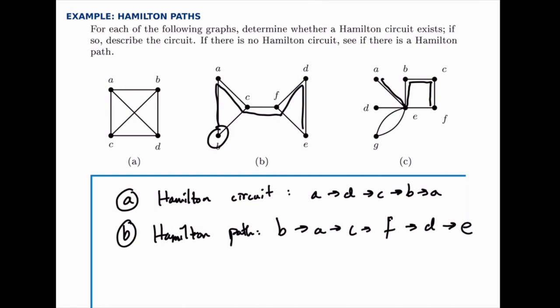So even if we start at D, we would find ourselves in the same situation. If we go from E the first time, we're going to find ourselves stuck in one section of the graph, unable to get back, without retracing our steps. So this one doesn't have a Hamilton path or circuit.